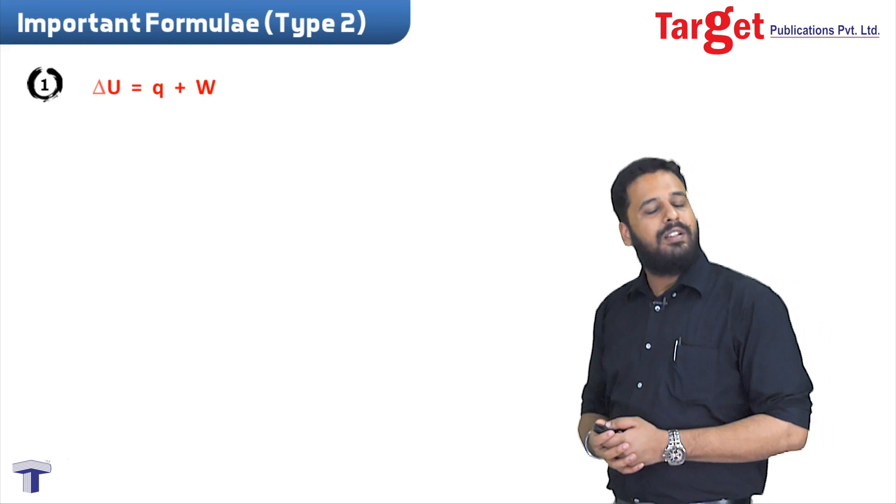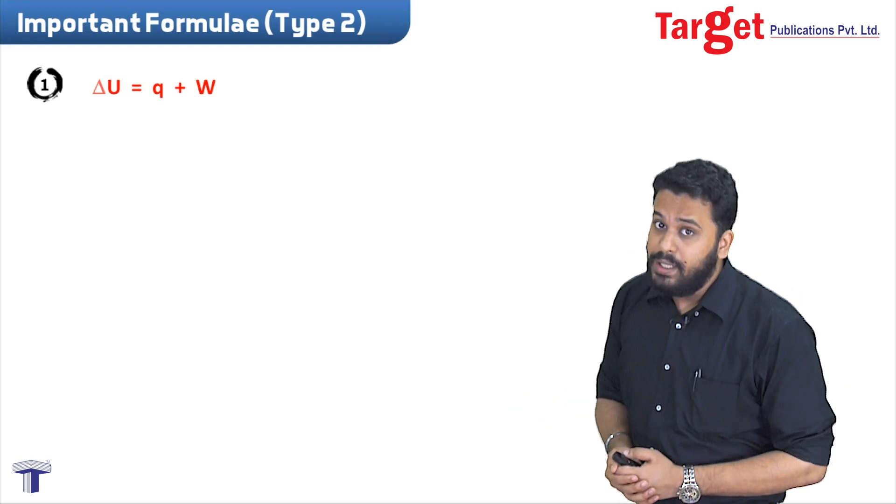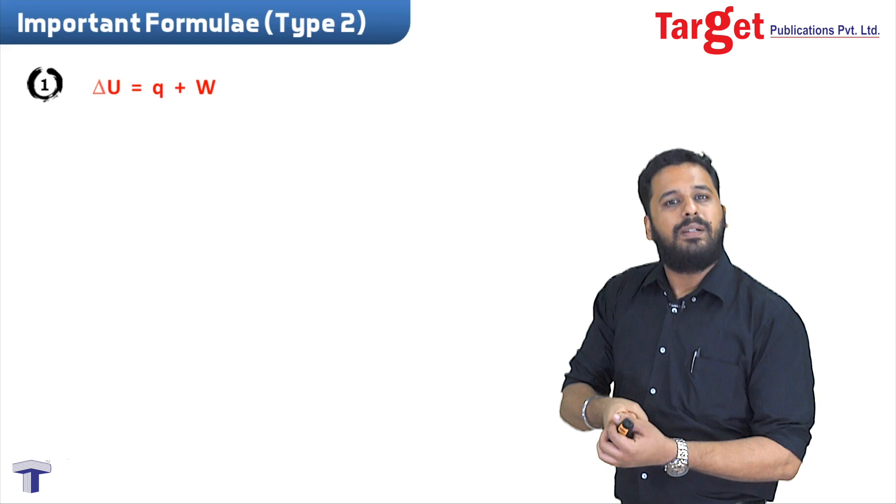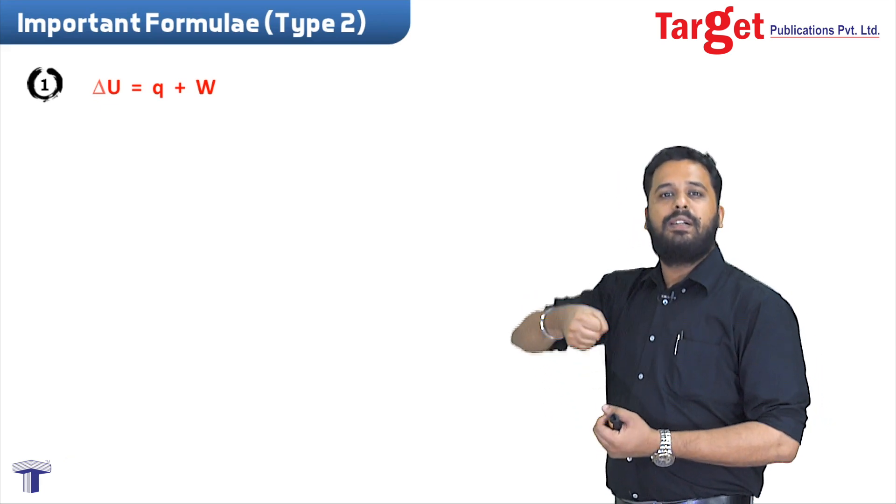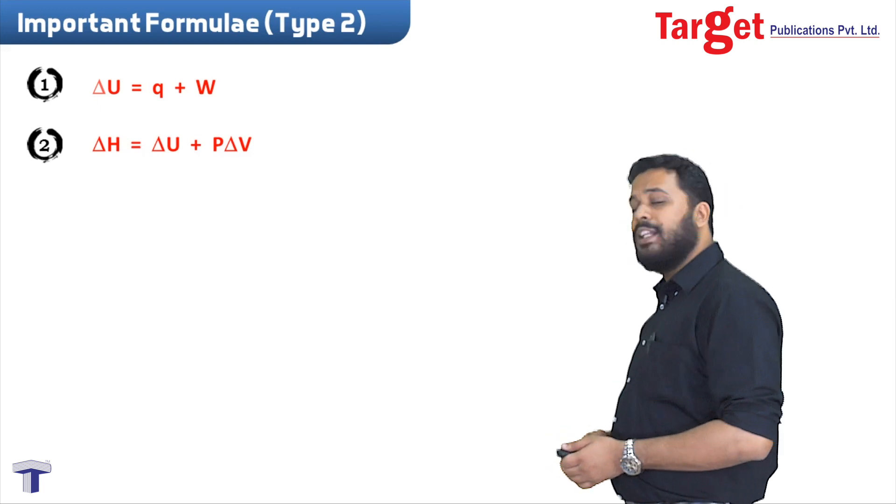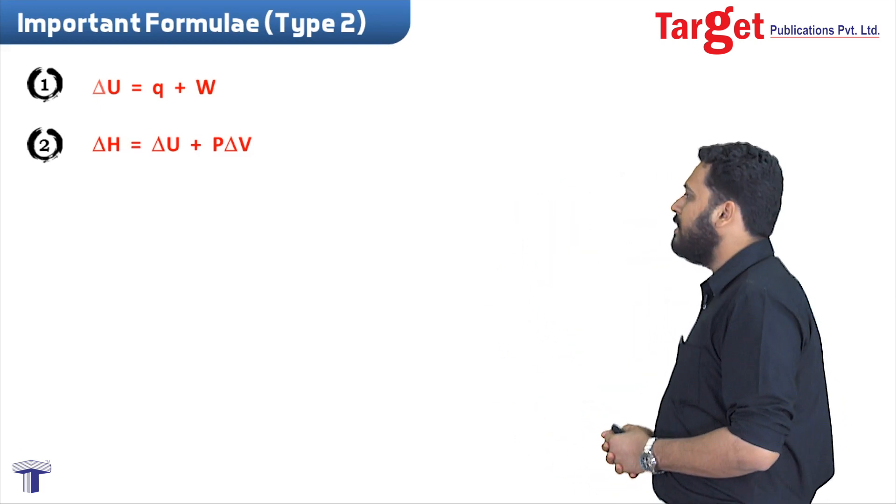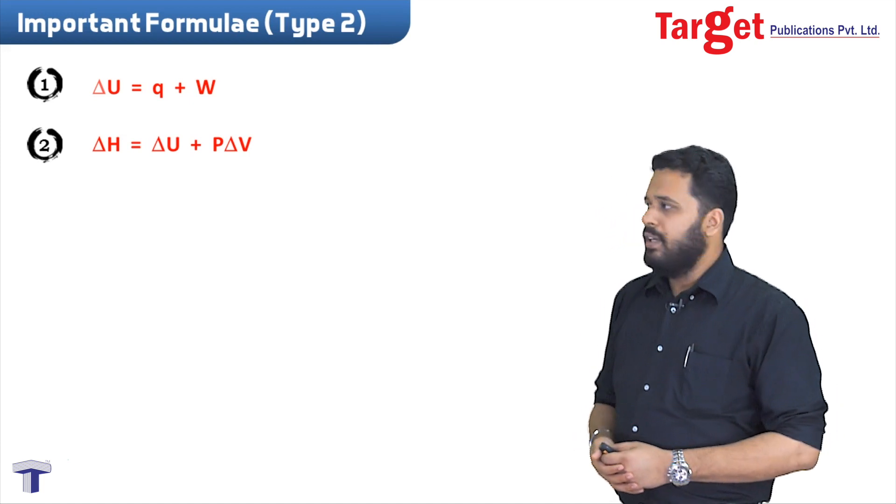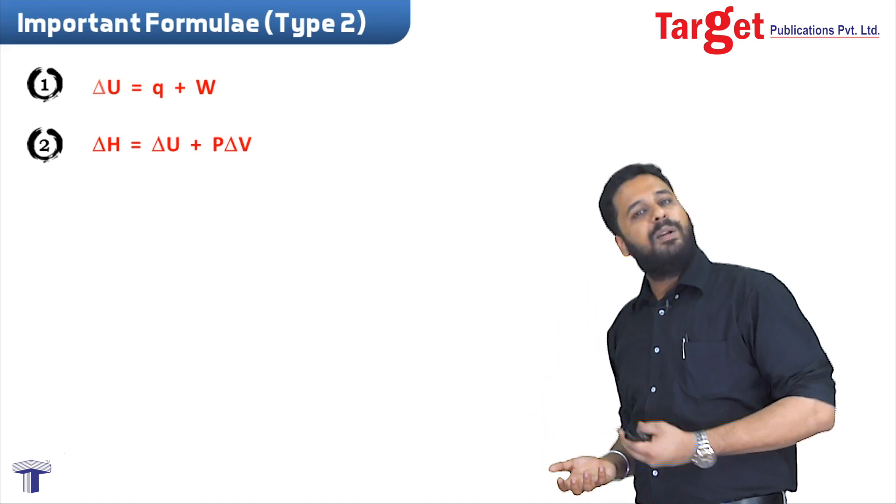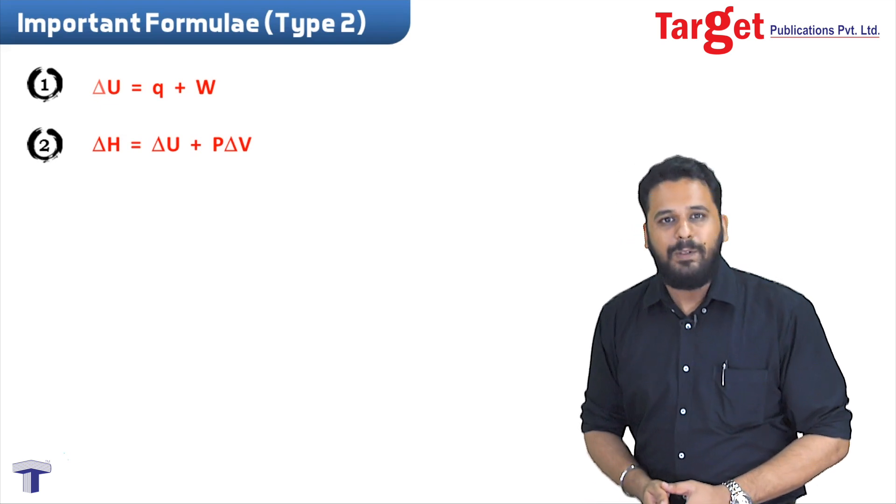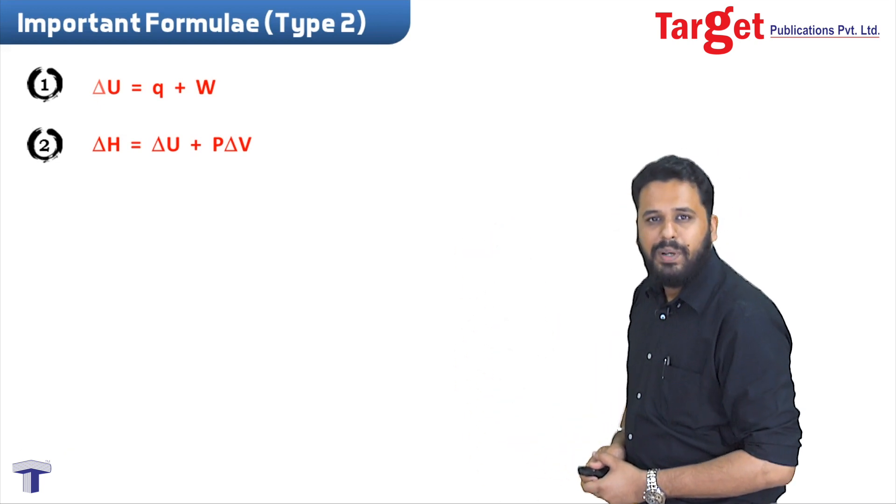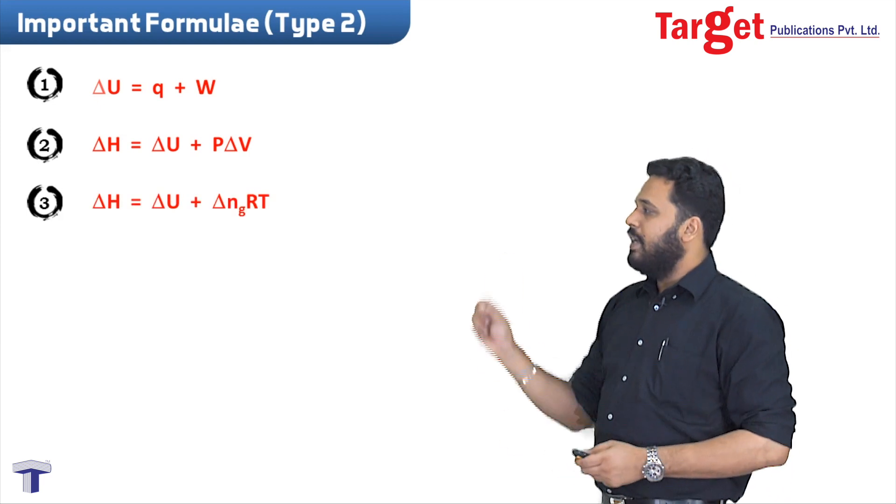Type 2 formulae: First is the first law of thermodynamics - delta U equals q plus W. You must remember the sign convention: heat absorbed is positive, heat given out is negative, compression work done on the system is positive, expansion work done by the system is negative. Then comes the formula for enthalpy: delta H equals delta U plus P delta V. This is basically the definition of enthalpy, defined as the sum of internal energy of the system plus energy that arises due to pressure and volume.